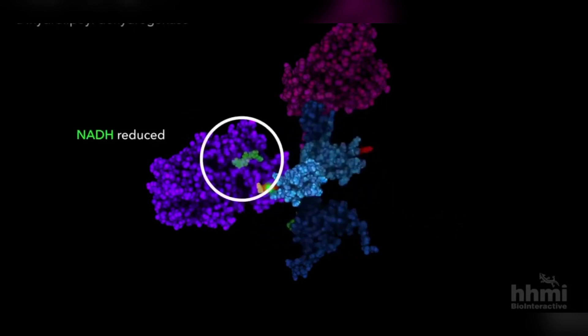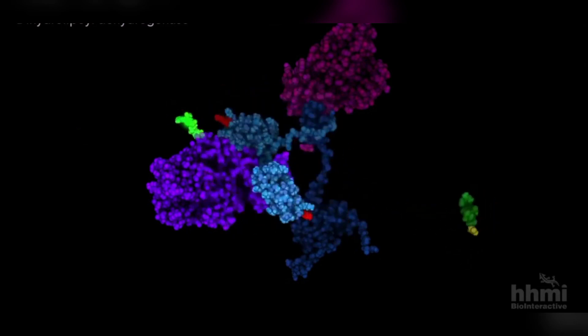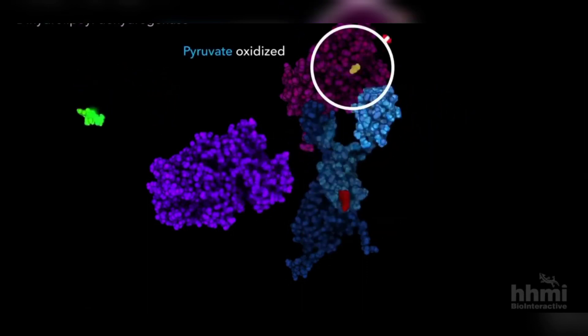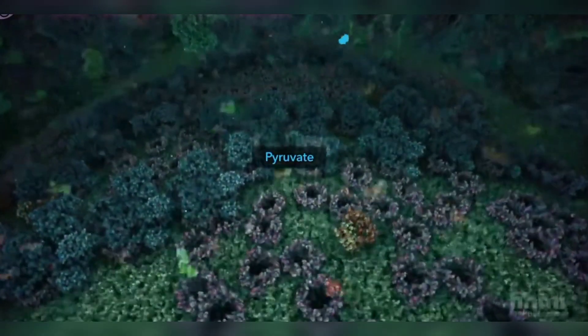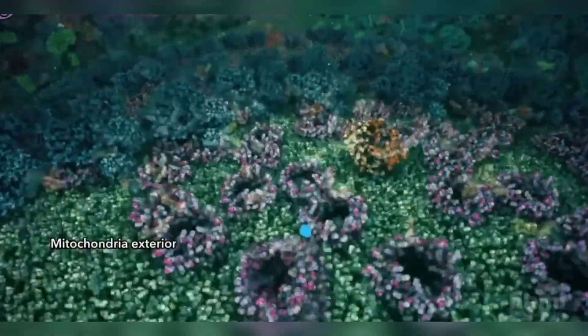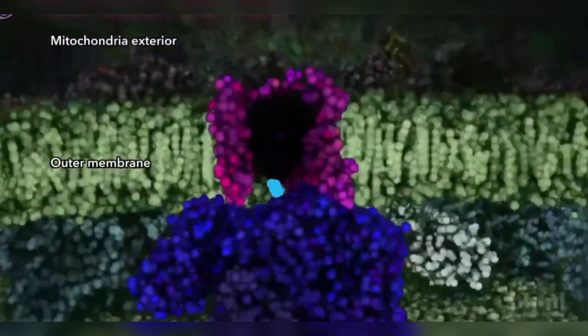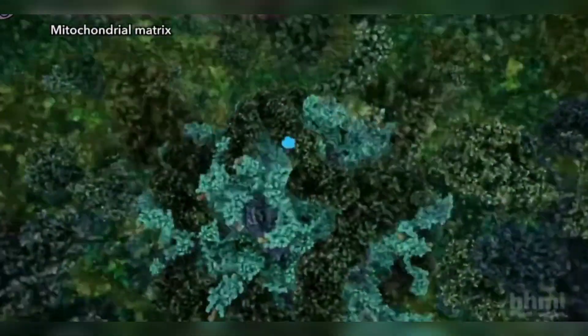The protons are released into the surrounding solution, while the electrons are transferred to the iron-sulfur cluster in HucB. The electrons are then transferred from HucB to HucC, which contains a cytochrome B subunit. The cytochrome B subunit is responsible for the final transfer of electrons to oxygen, which serves as the terminal electron acceptor. The reduction of oxygen produces water, which is released into the surrounding solution. The flow of electrons generates an electric current which can be used to power electronic devices.